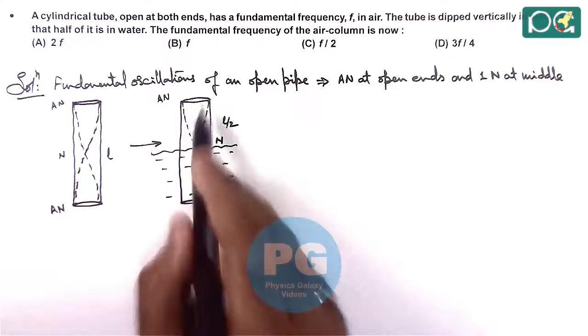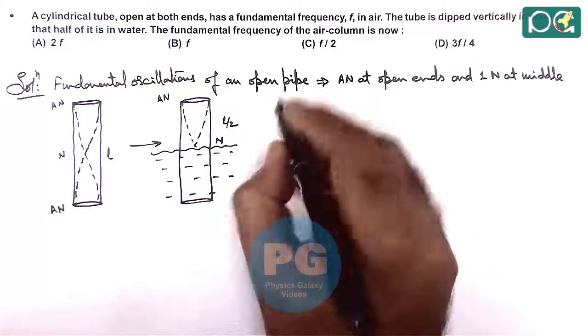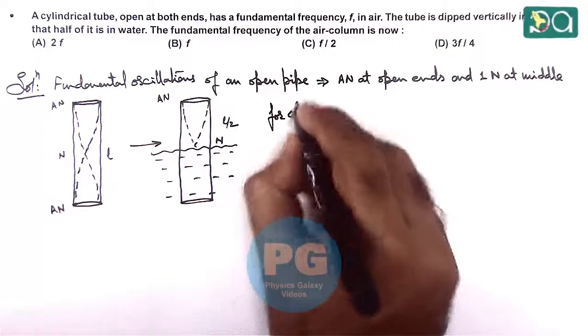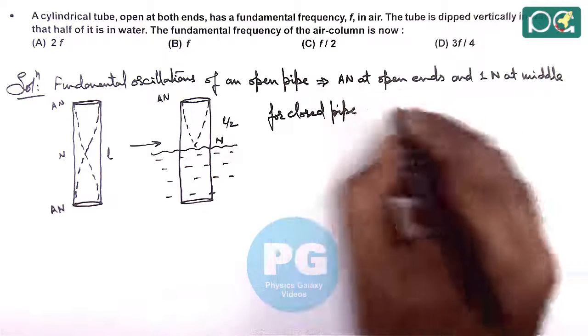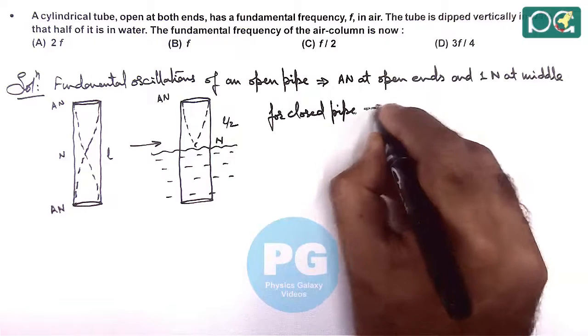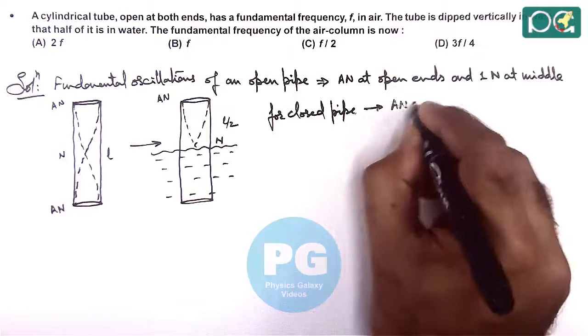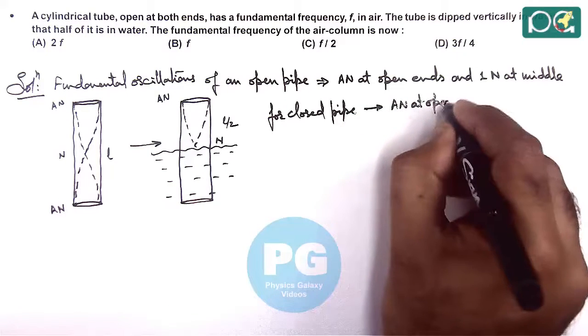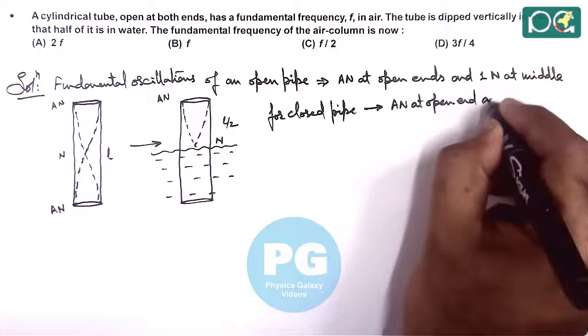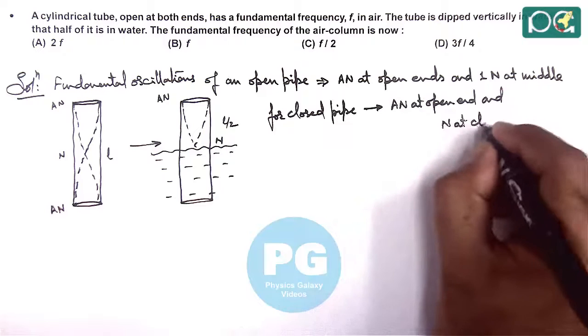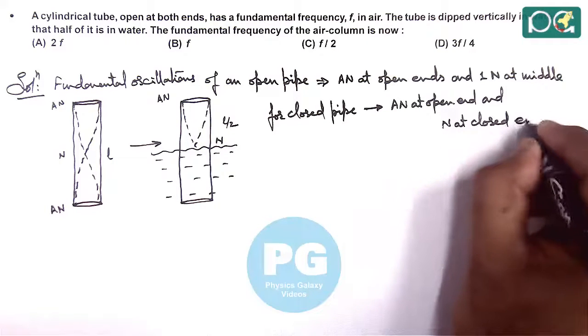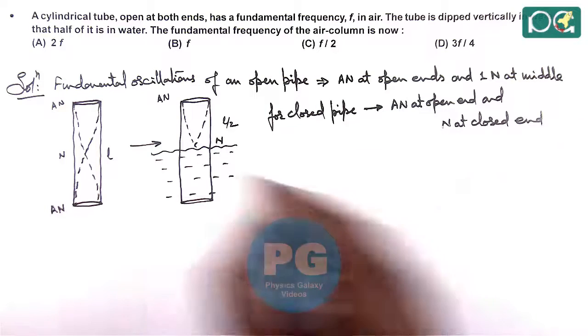And mathematically, we can also verify it. Here we can see, for closed pipe, anti-node at open end and node at closed end. This is the case. So here we can see, directly...